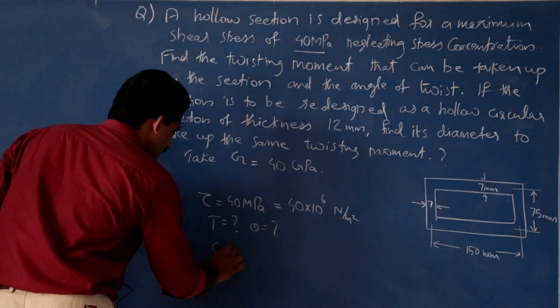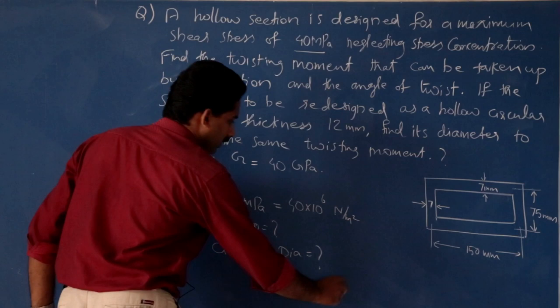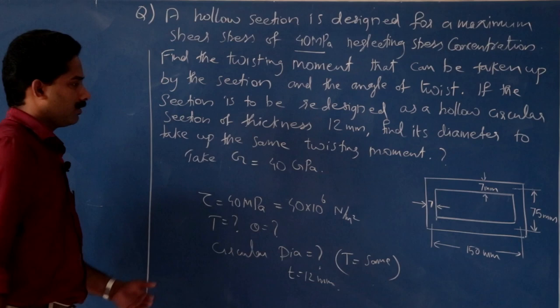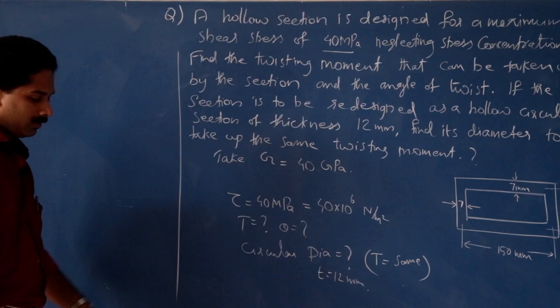So, second case: circular pipe diameter. Condition: same torque. That is the case with 12 mm thickness. First part, we need to find out the torque. Torque equation — torque and shear stress tau are related.